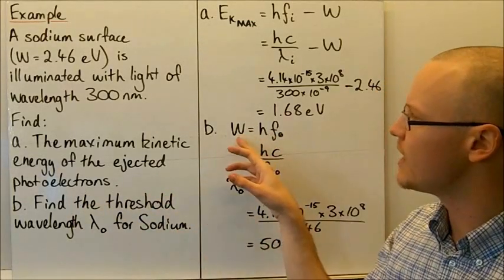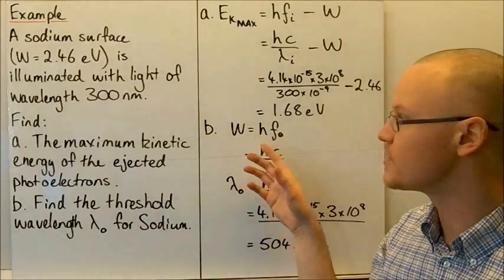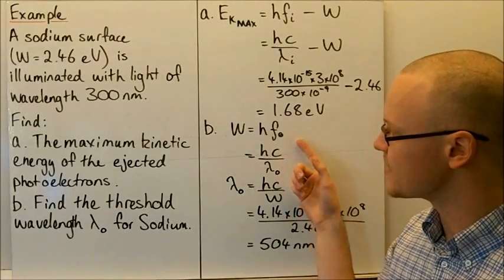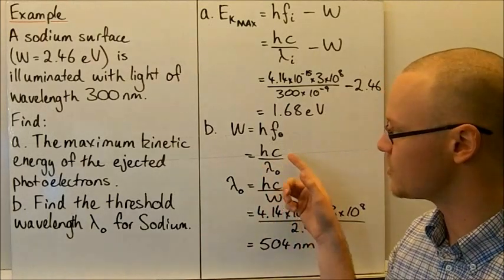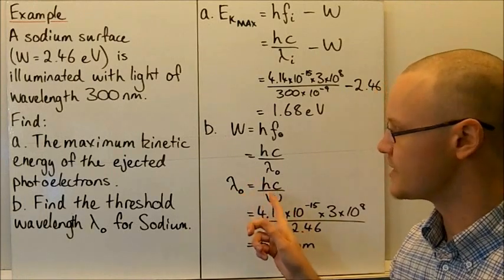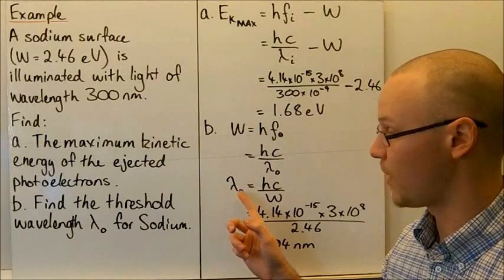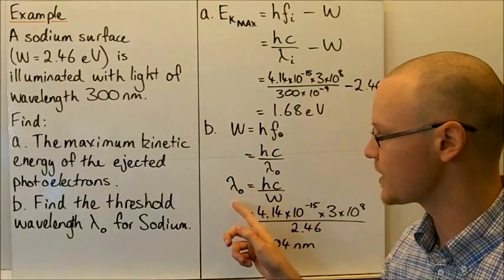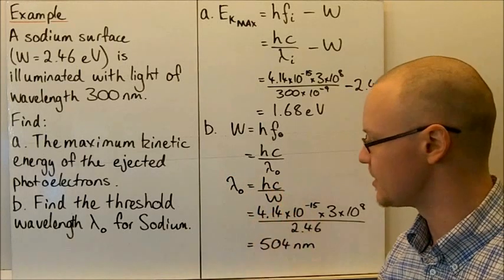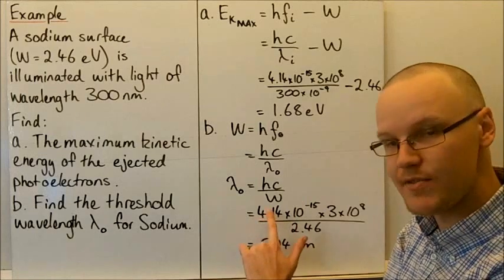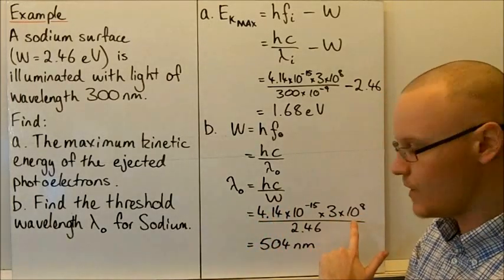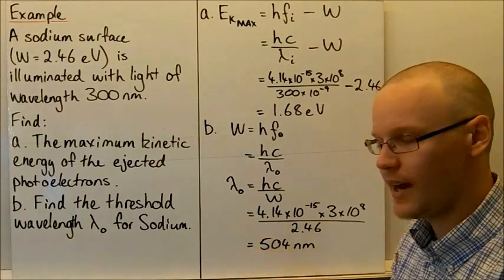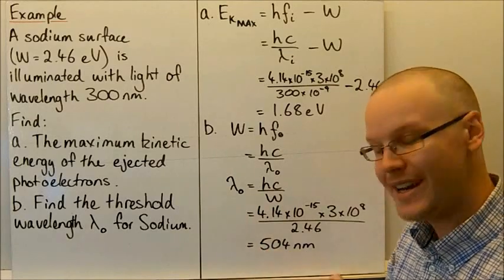To find the threshold wavelength for sodium, the work function equals h times the threshold frequency, and substituting c/λ for frequency gives the threshold wavelength as λ₀ = hc/W. Substituting Planck's constant in electron-volt-seconds, the speed of light (3 × 10⁸), and the work function of 2.46 electron volts, the threshold wavelength for sodium is 504 nanometres.